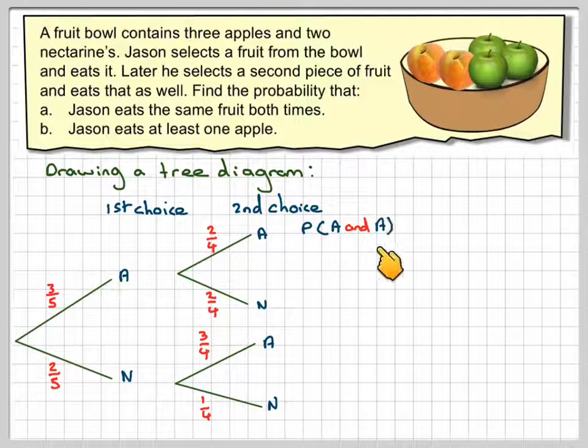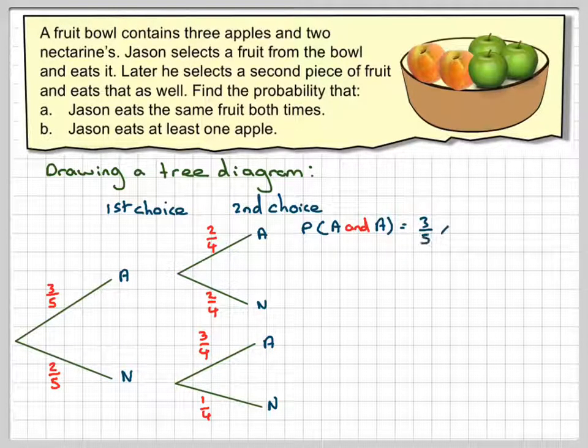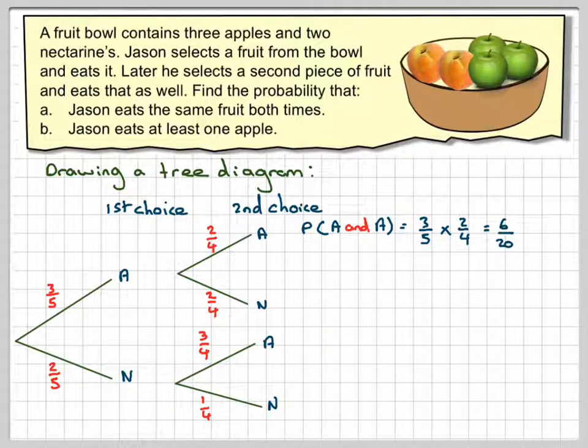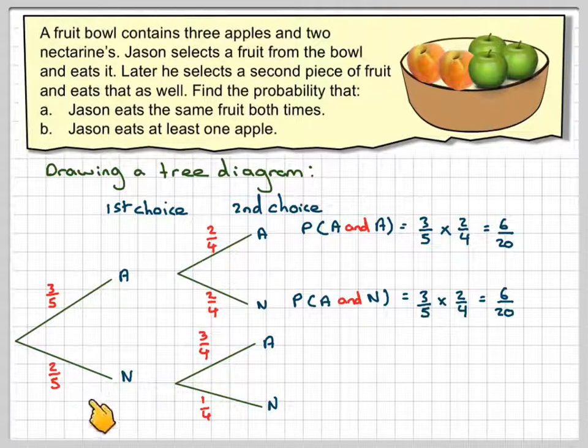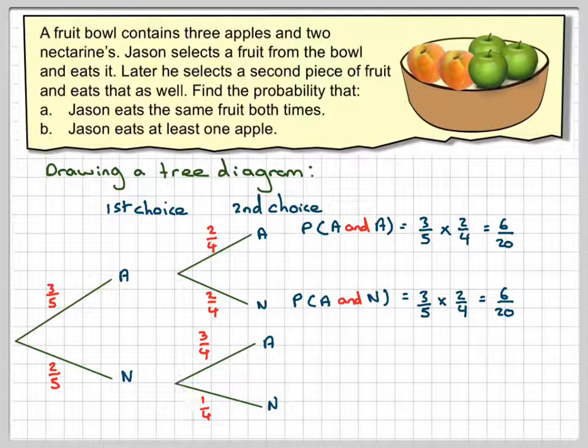So the probability of an apple and an apple will now be three-fifths times two-fourths which is six out of twenty. And then the probability of an apple and a nectarine will be three-fifths times two-fourths, so again that gives you six out of twenty.